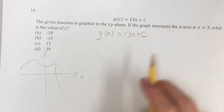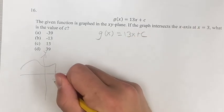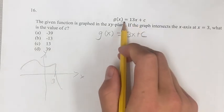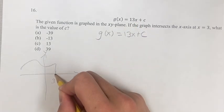The graph intersects the x-axis at x equals 3, so that would look something like this. Again, this is a line, so it wouldn't look anything like this, but the point stands for any function.